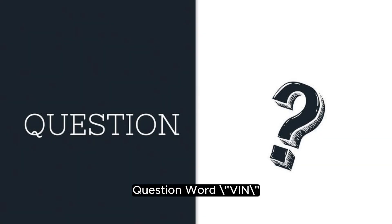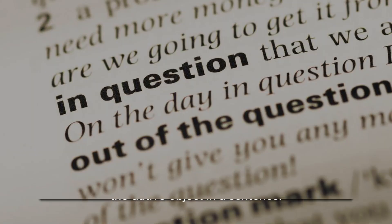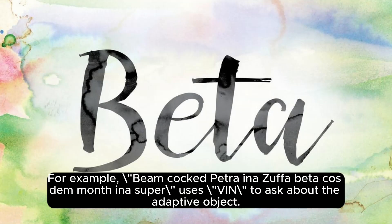The question word 'ven' helps inquire about the dative object in a sentence. For example, 'ven' is used to ask about the dative object.